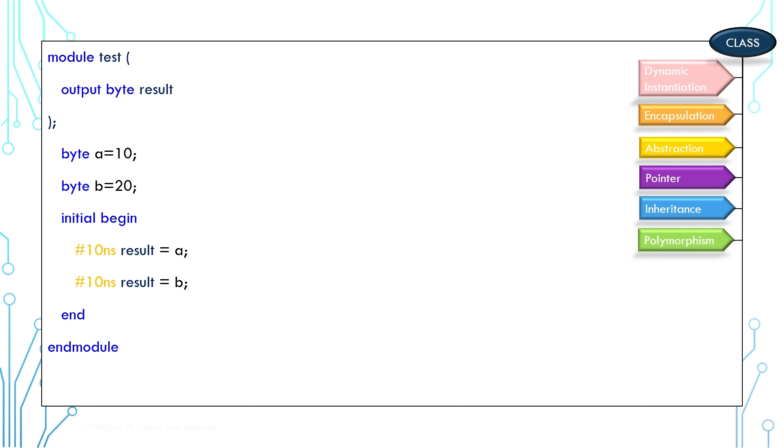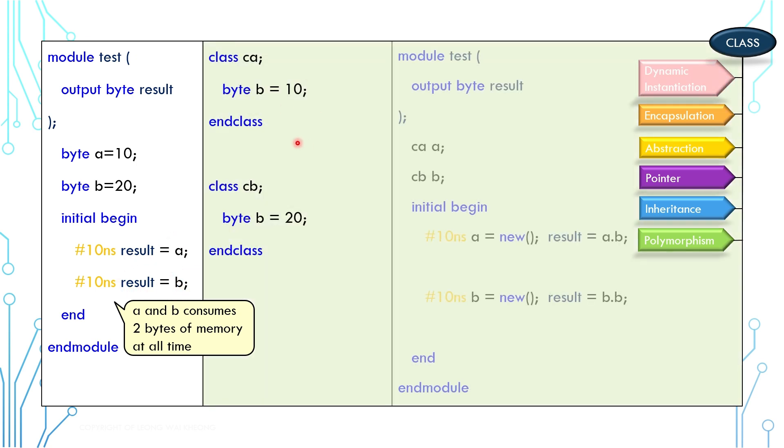This is a similar example where result is set to A for some time and after that to B for some time. A and B consume two bytes of memory at all times. If we use class, the example will look like this. A and B are instantiated only when they are needed. Even better, if we no longer need the handle, we can release the memory by setting the handle back to null.